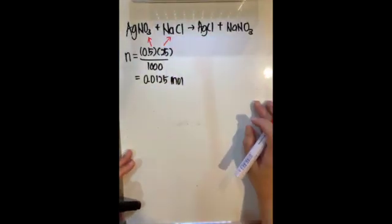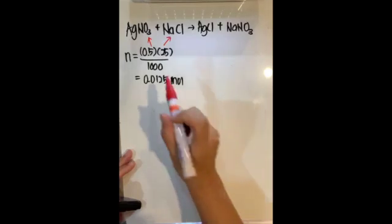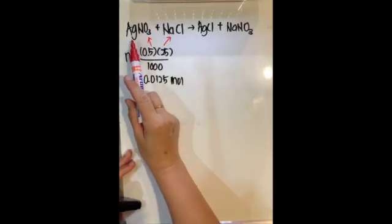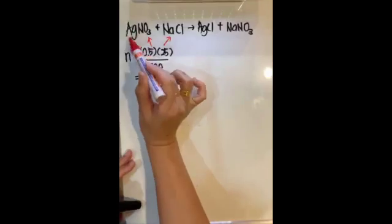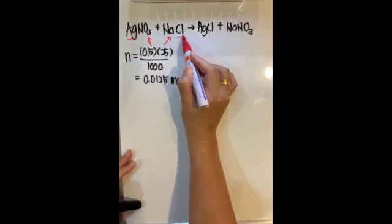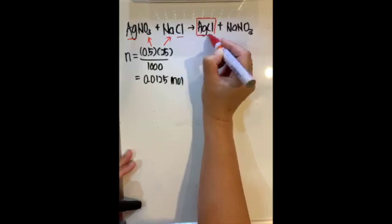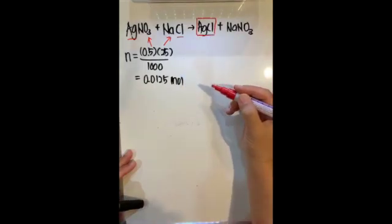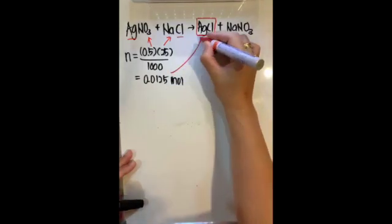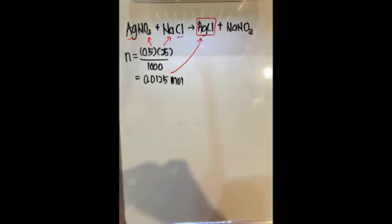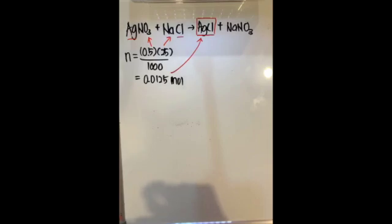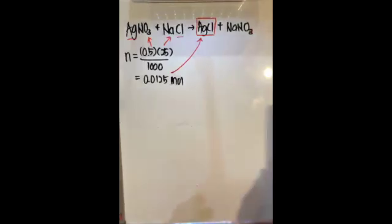Based on the balanced chemical equation, one mole of silver ion reacts with one mole of chloride ion to form one mole of silver chloride precipitate. Since they are in a 1:1 ratio, we will form 0.0125 mol of silver chloride precipitate.